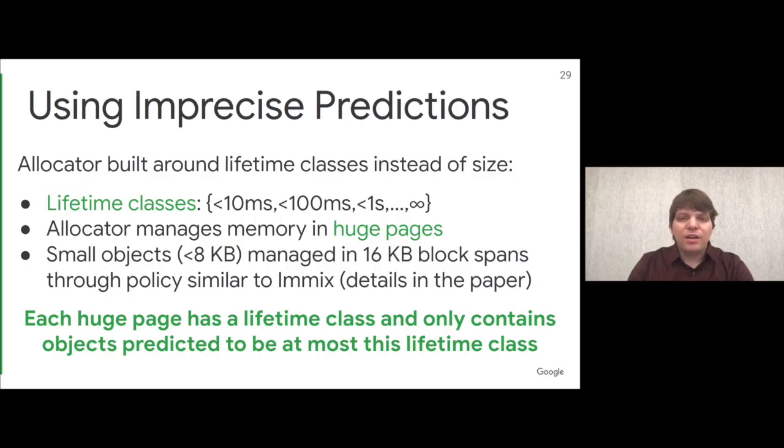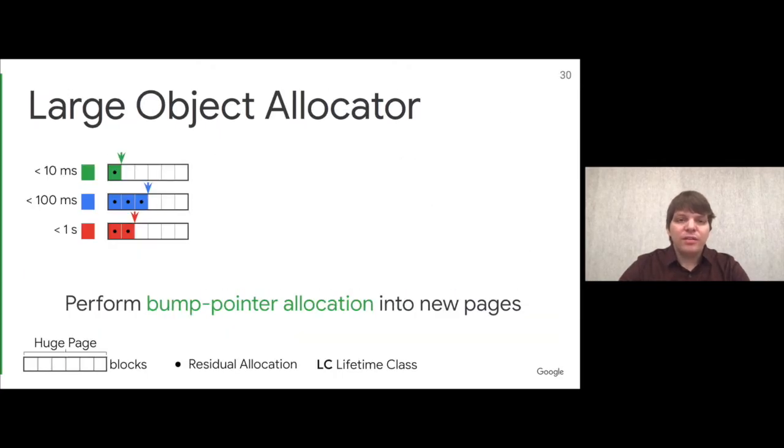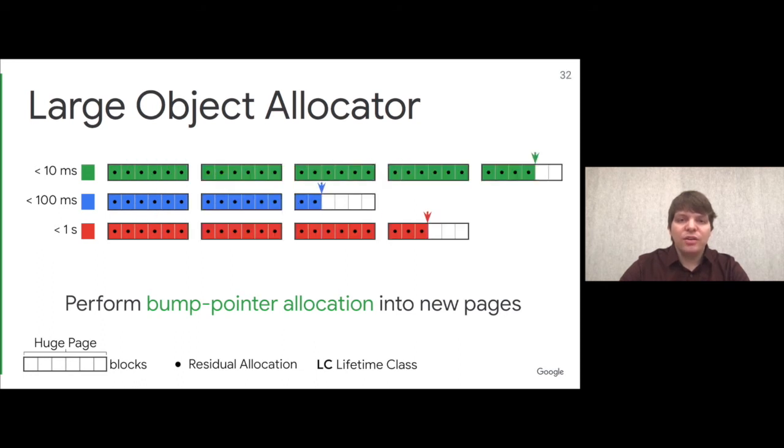The way our allocator works is that it enforces a key invariant. Each huge page has a lifetime class attached to it and only contains objects predicted to be at most this lifetime class. At allocation time, you predict the lifetime class and use this to identify the page the object should be allocated into. Pages are divided into eight kilobyte blocks, and initially, you simply append the current object to the last page in a particular lifetime class using bump pointer allocation.